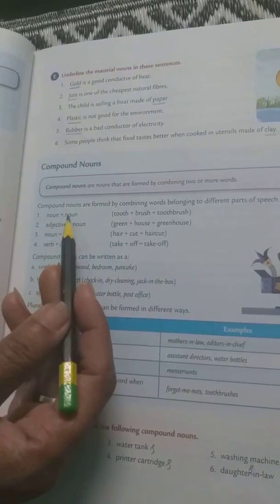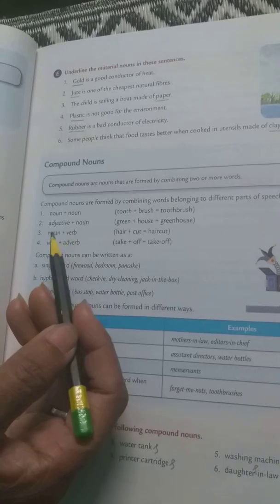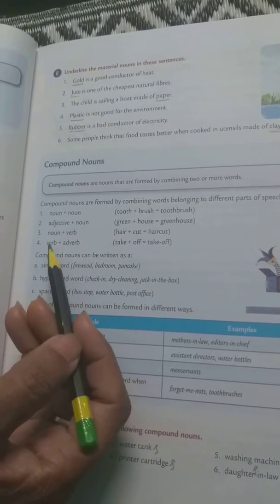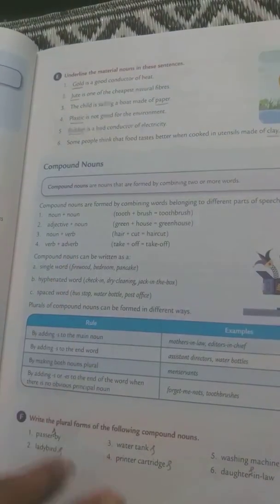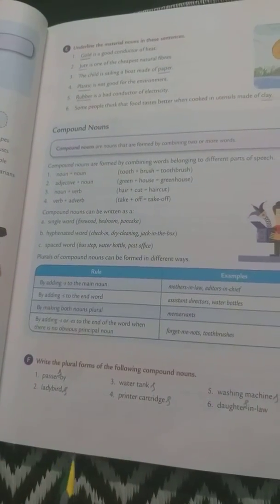Sometimes noun plus noun also make the compound noun, adjective plus noun also, noun plus verb also, verb plus adverb also. By joining two or more than two words, we can make a compound noun.